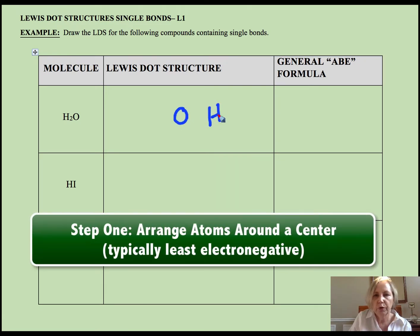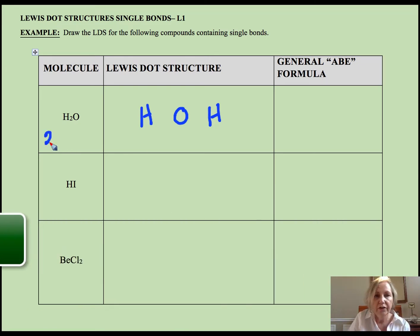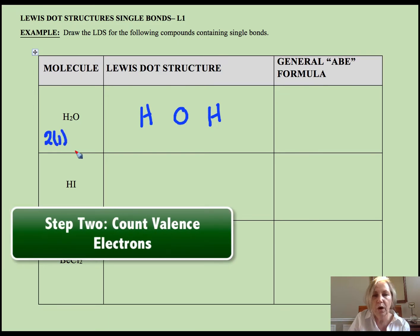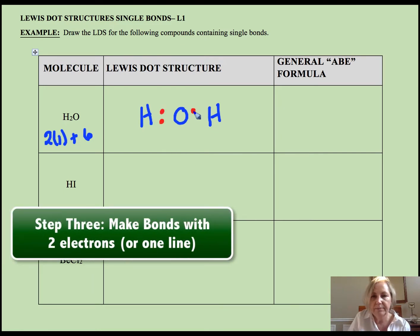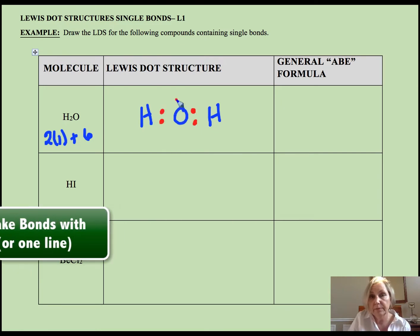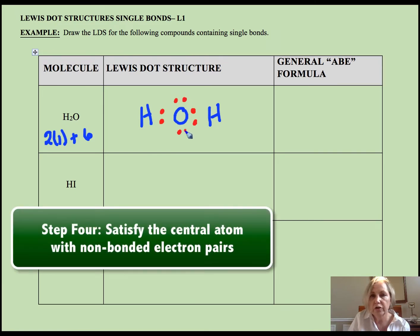We're going to put oxygen in the middle because although it is the most electronegative, hydrogen can never be in the middle. There's two hydrogens that each bring one valence electron, there's one oxygen and oxygen brings six valence electrons, so I have a total of eight valence electrons.